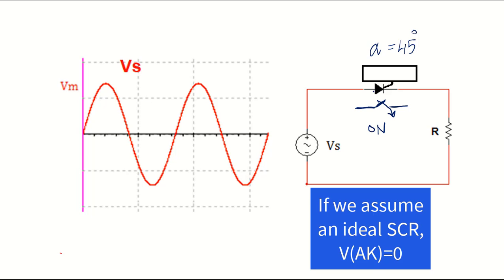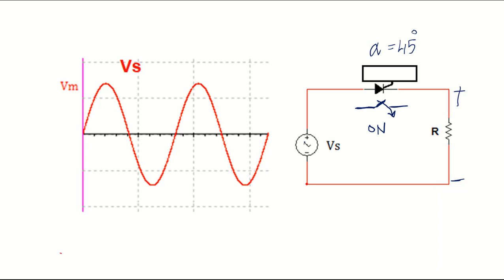Assuming that the drop voltage across the thyristor is zero, the voltage appears across the load is going to be the same as the source voltage. Before 45 degrees switches off and voltage across the load is zero. Starting from 45 degrees, the load voltage is the same as the source voltage.